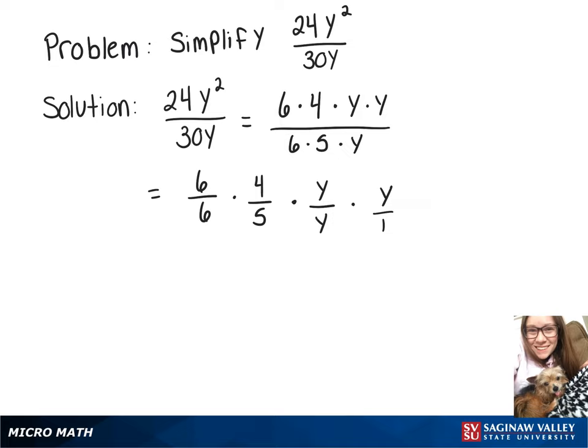So now we can cross off 6 over 6 and y over y, because those both simplify to 1. Then we're left with 4 times y on top, which is 4y, over 5 times 1 on the bottom, which is just 5.